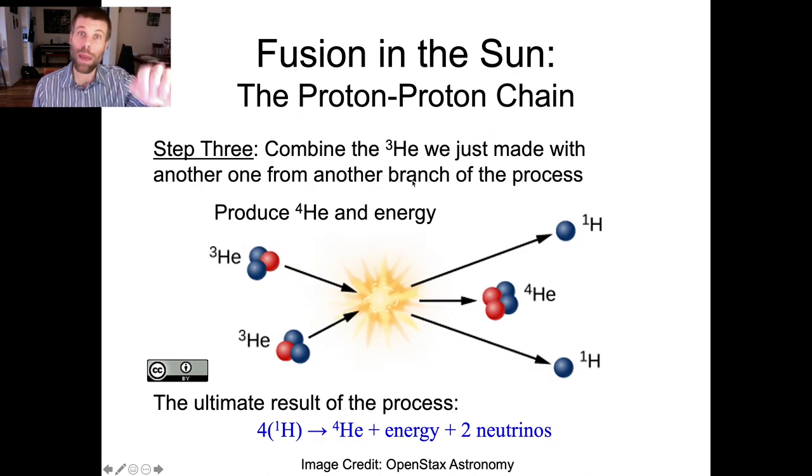And then that ³He that we just made in the previous step will meet another ³He that was made in a parallel chain of events. Those will smash together. They'll create ⁴He, but there are going to be some extra protons around. Those ³He nuclei together carry a total of four protons, but we only need two of them to make helium. So the extra two whiz off, and eventually they'll bump into something else and make more helium through another instance of the proton-proton chain. We get a bunch of energy out at this stage, and this is the end of the process.